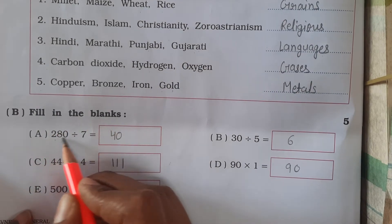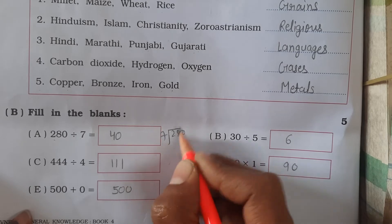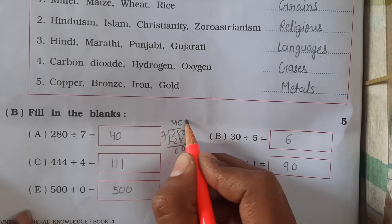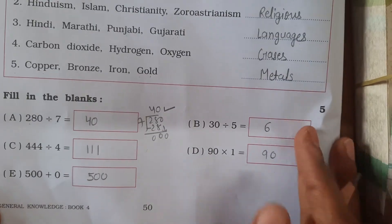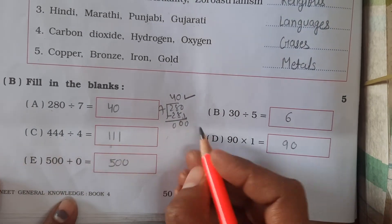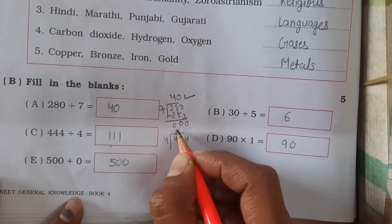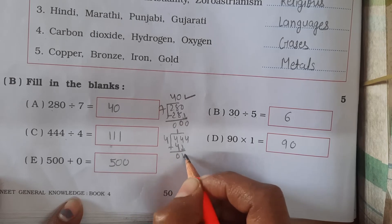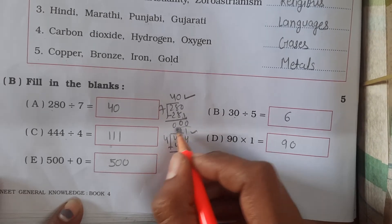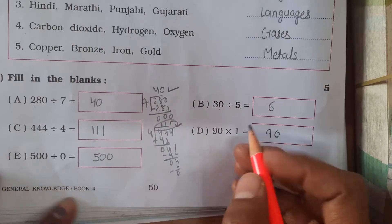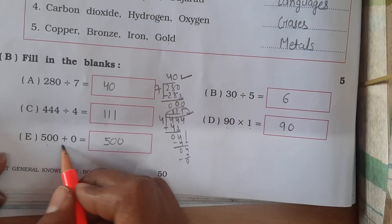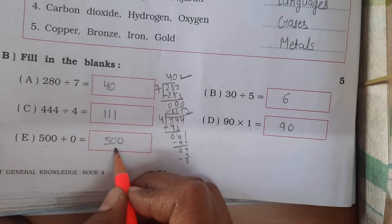Now in section B, fill in the blanks with division. 280 divided by 7 — 7 fours are 28, bring down 00, so the answer is 40. Next: 30 divided by 5 — 5 sixes are 30, so the answer is 6. Now 444 divided by 4 — 4 ones are 4, bring down, 4 ones are 4, bring down, 4 ones are 4, so the answer is 111. Also 90 multiplied by 1 equals 90. And 500 plus 0 is 500.